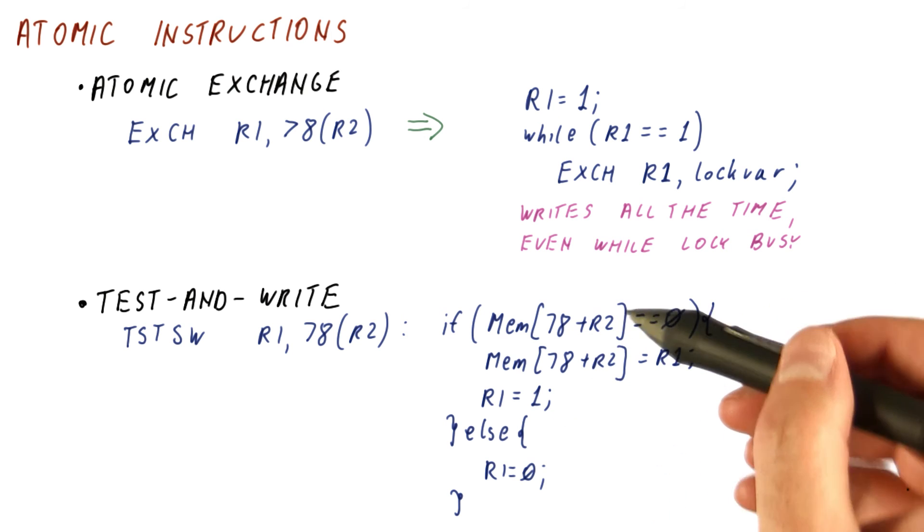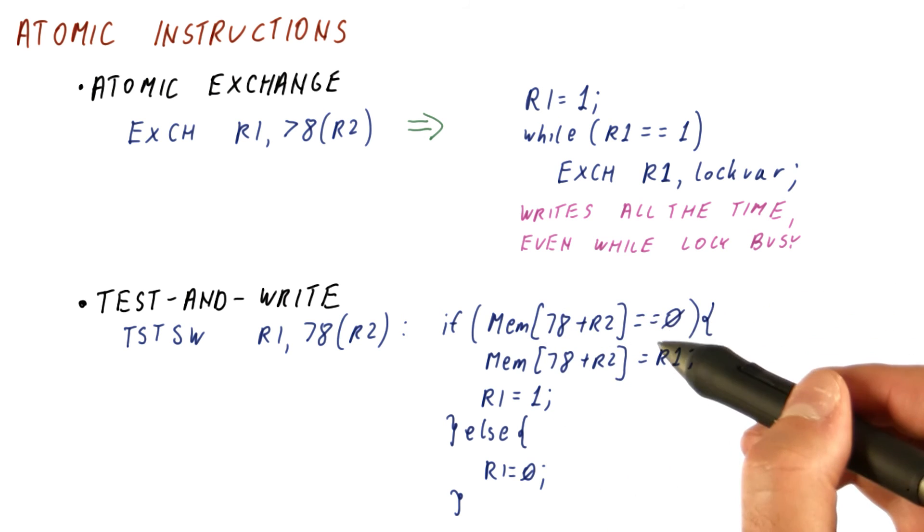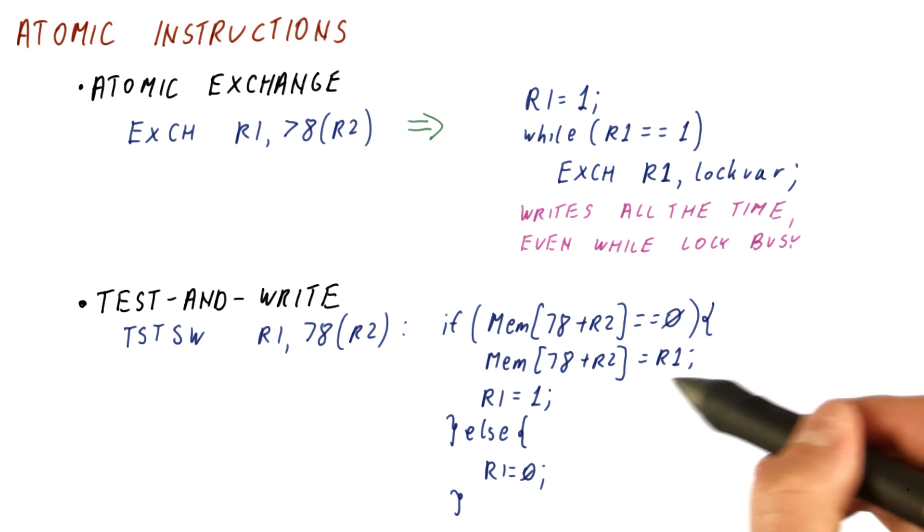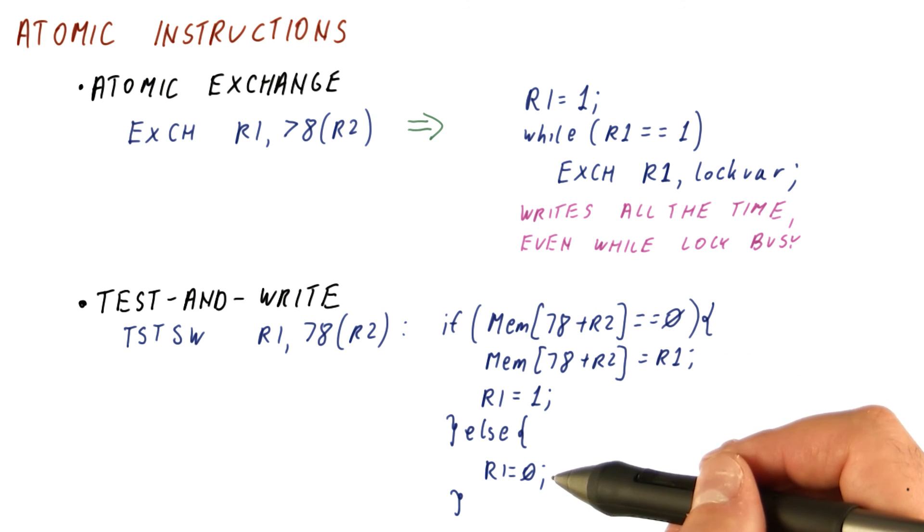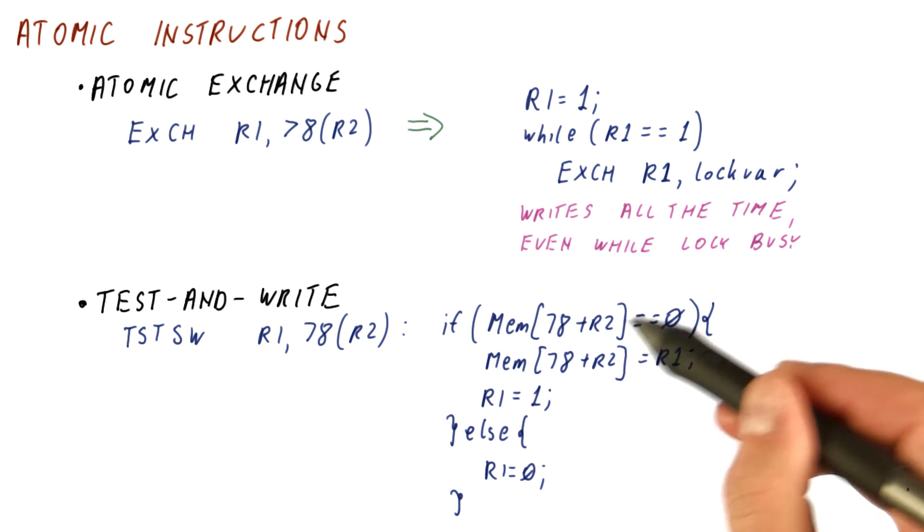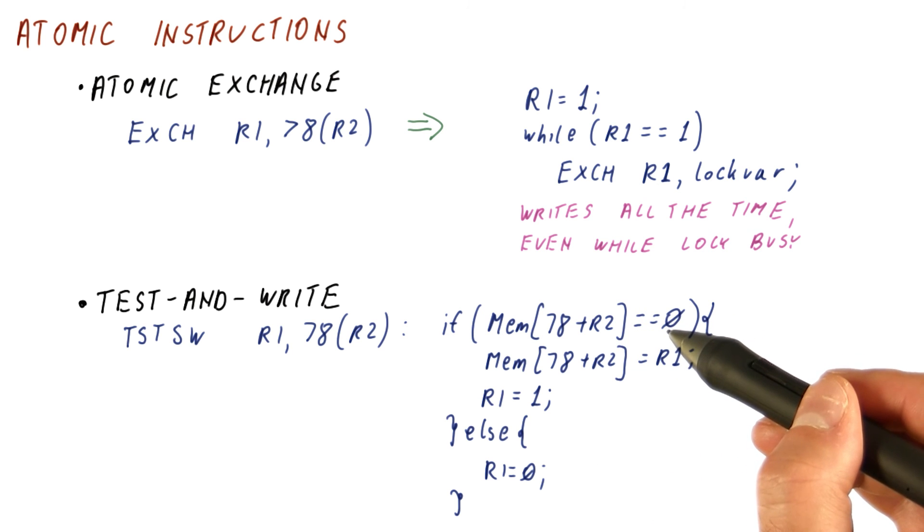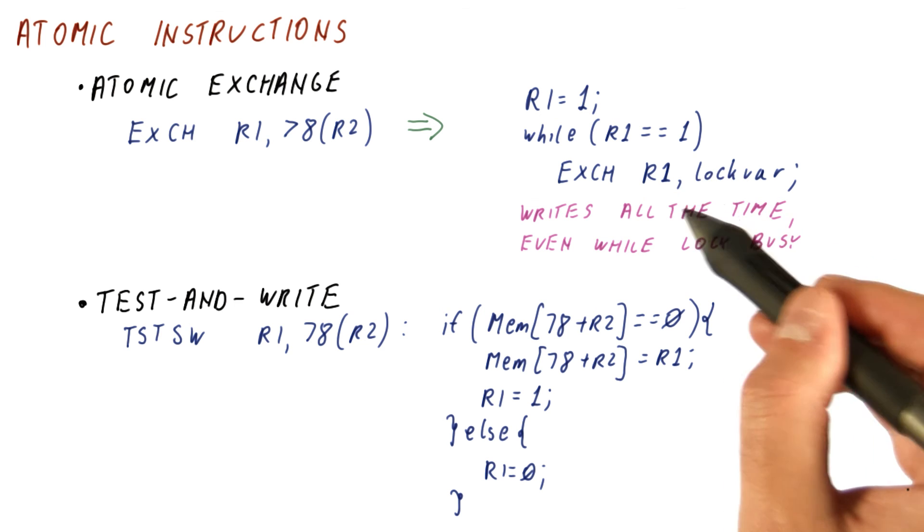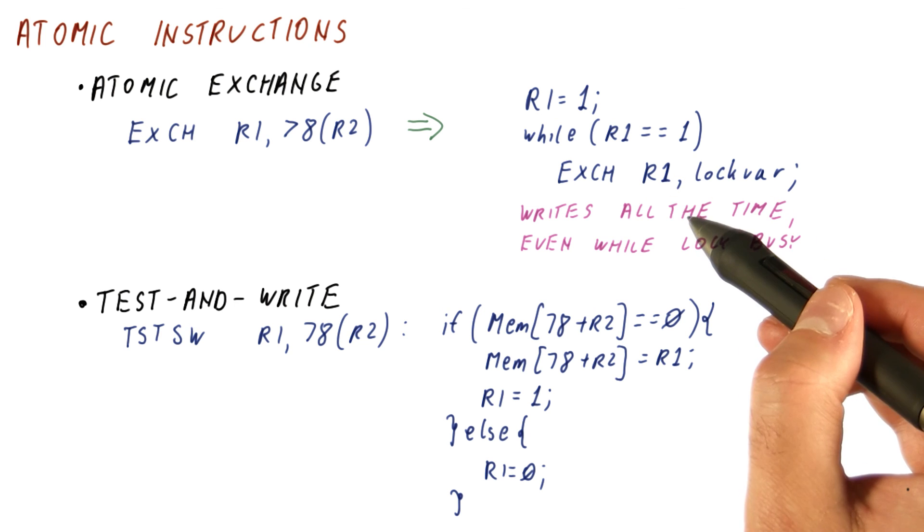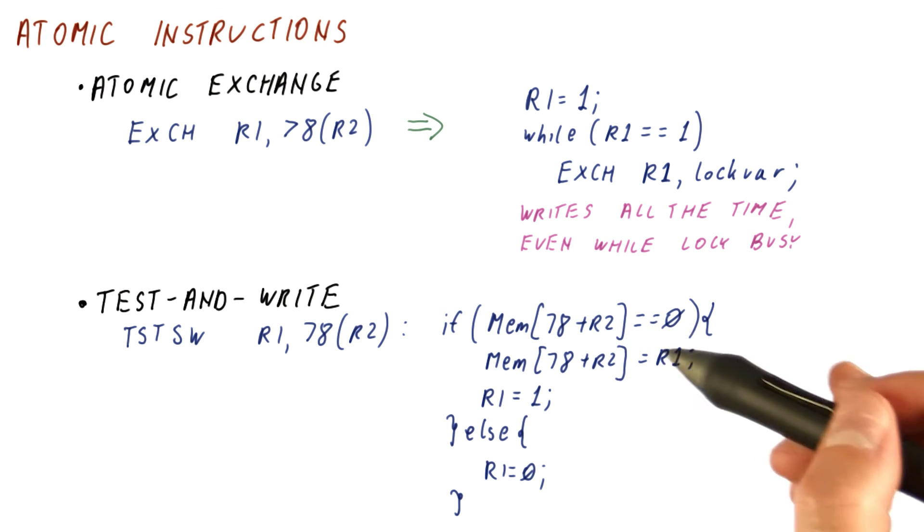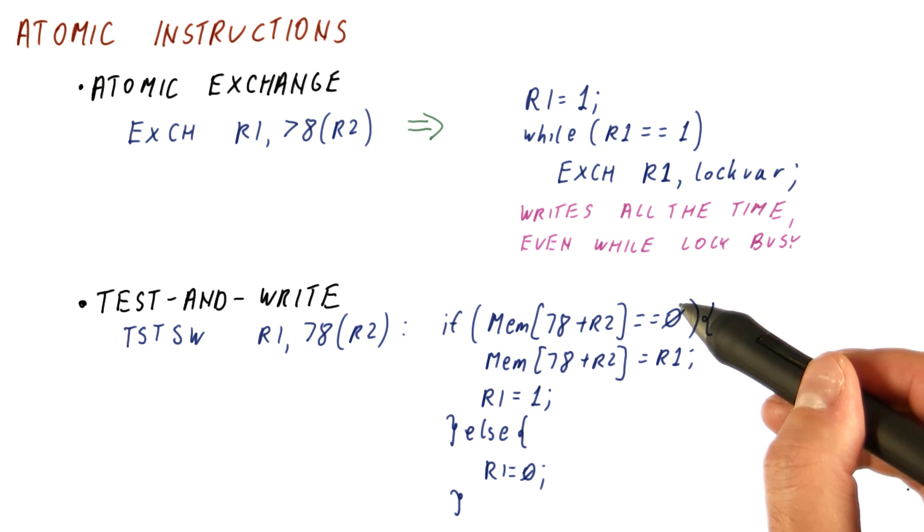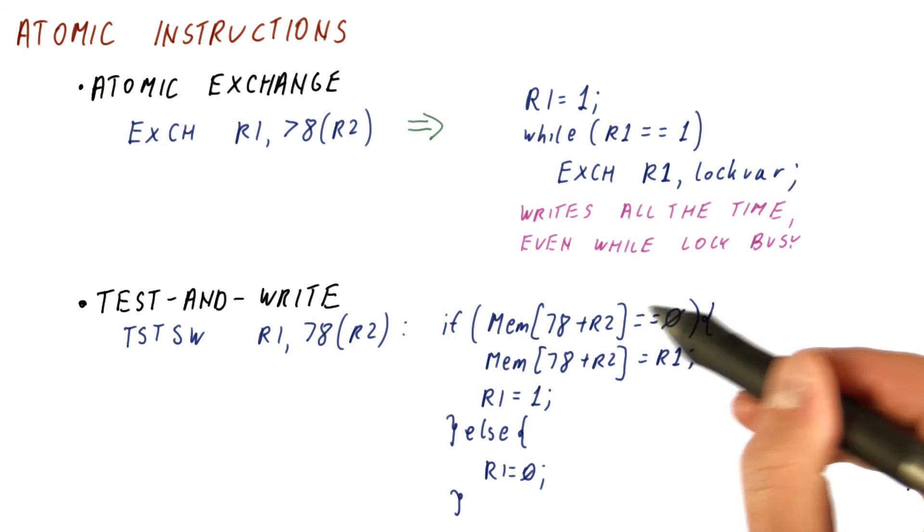So the idea here is that we are testing whether the lock is free. If it is free, then we try to write a 1 in it. If it's not free, then we simply continue. There is no point in trying to write to a lock that we know is not free. So we're avoiding the writes that happen in the exchange while the lock is actually not free. So this behaves very similarly to the exchange. Except that it only does the write if the lock has the unlocked state.